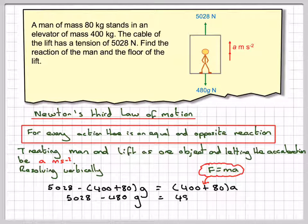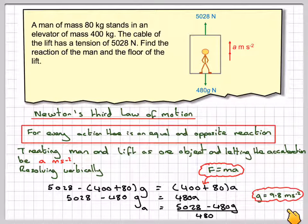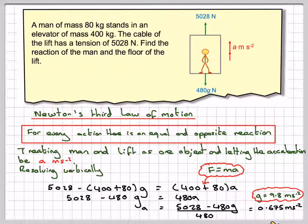Rearranging, we have 5028 minus 480G equals 480A. Therefore A equals 5028 minus 480G divided by 480, which gives, using G as 9.8 meters per second squared, an acceleration of 0.675 meters per second squared.